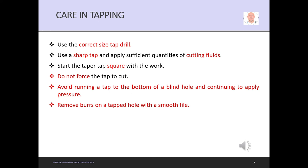Tapping tips: Number one, use the correct size tap drill. For example, for M6 by 1 pitch, use 5mm drill (6 minus 1). Second, use a sharp tap and apply sufficient quantities of cutting fluid to reduce friction. Third, start the taper tap square with the wall. Fourth, do not force the tap to cut—work slowly. Fifth, avoid running a tap to the bottom of a blind hole as this can cause damage. Finally, remove burrs on the tap hole with a smooth file.